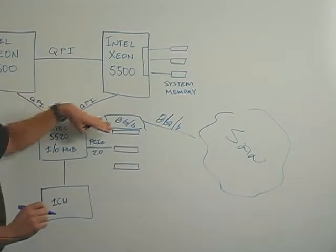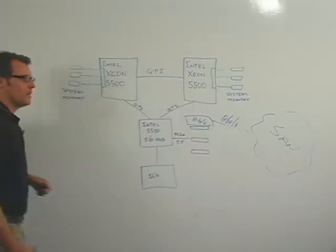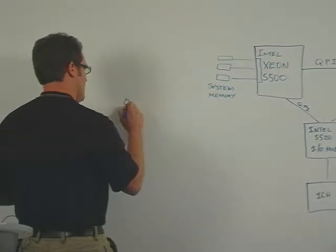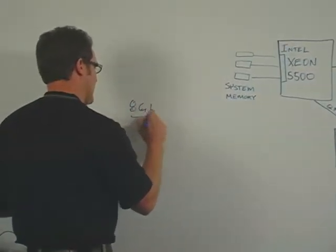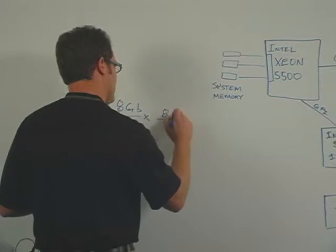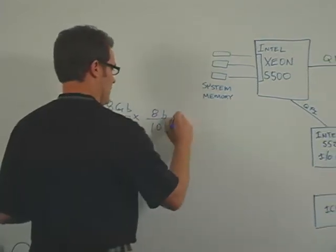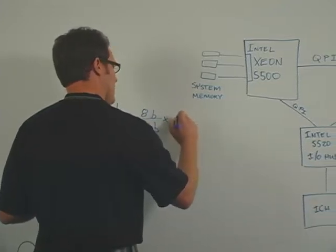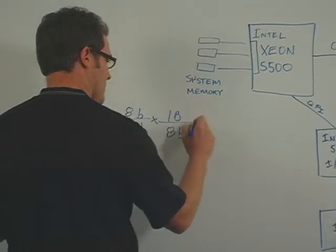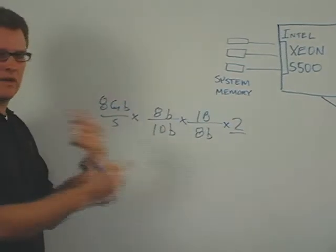To get an idea of what kind of bandwidth has to go through this system here, let's do a little bit of math. So you start off with 8 gigabit per second, and you have 8 bits for every 10 bits, that's fiber channel. Then you have 1 byte is made of 8 bits. Then you have times 2 because it's full duplex, transmit and receive.